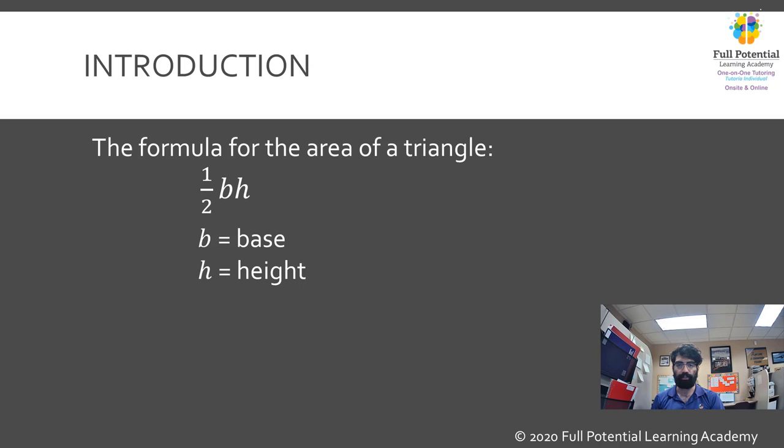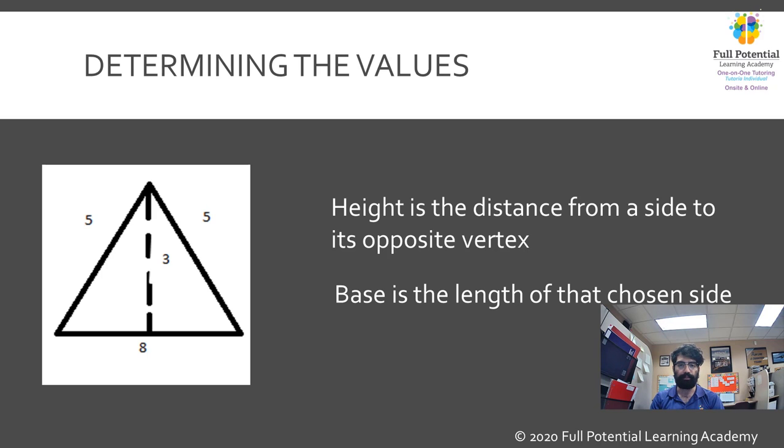First, let's look at a triangle in which the values of the height and sides are given. The height is defined by the distance between a side of a triangle to its opposing vertex. This is shown by the dotted line in the diagram.